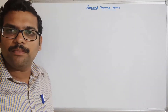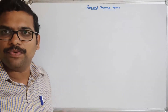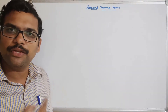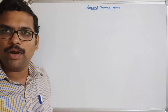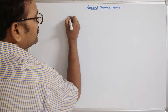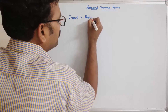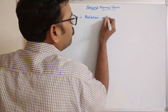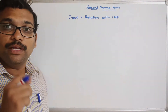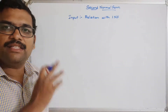In the previous session, we saw 1NF — the first normal form — where the relation should not contain multiple values for a single attribute. If there are any multiple values for a single attribute, we have to insert new rows to avoid those multiple values. Coming to the second normal form, the input is a relation that is already in 1NF. That is the first condition: the relation should satisfy the 1NF condition.